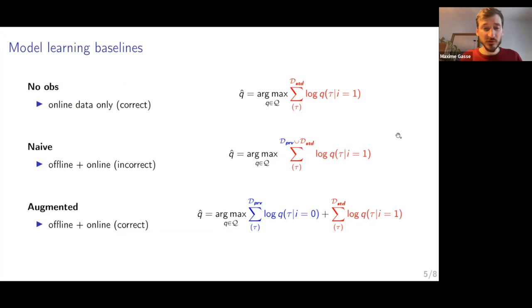And then our method, augmented, uses both datasets also, but in a way where you distinguish the two regimes, the privileged regime and the standard regime. What we expect is that using this privileged data will allow you to perform better than not using this privileged data. So we would like to perform better than no obs, no observations. And what we expect to observe is that if you do it naively, if you use this privileged data naively, it will actually degrade the performance of your agent compared to when you don't use the privileged data.